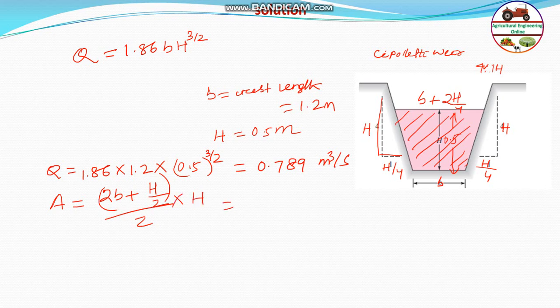Putting this value, B is 2 into 1.2 plus H is 0.5 divided by 2 divided by 2 into 0.5. That is meter square. The value will be equal to 0.6625 meter square.